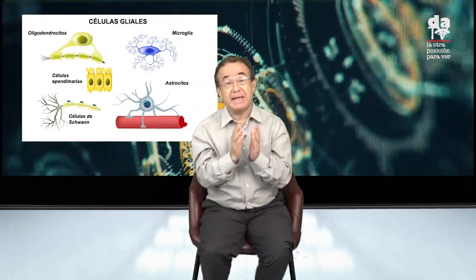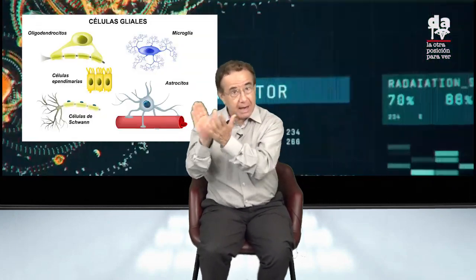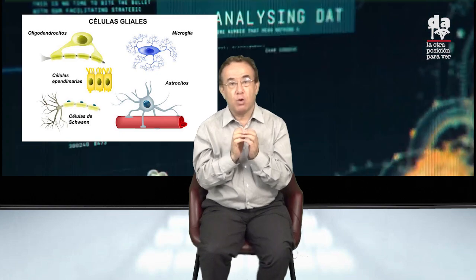El cerebro humano se articula en dos grandes hemisferios, está unido por el corpus callosum, y ya están identificadas alrededor de 100 mil millones de neuronas con conexiones permanentes entre ellas, lo que conduce a un tema del cual nos ocuparemos en otro momento: la flexibilidad neuronal, por ejemplo el papel de las células glía.